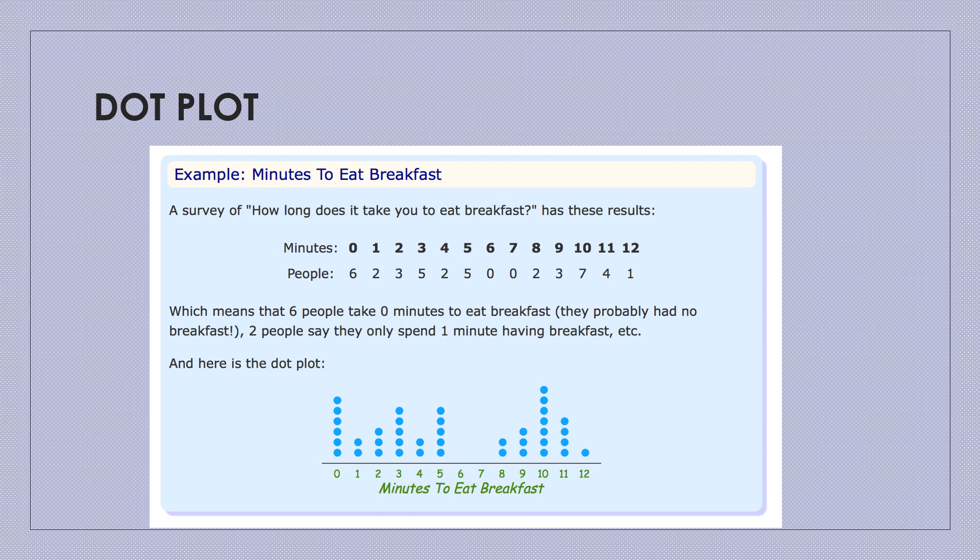Let us see what a dot plot is. Here I have an example. There is a survey and the question is, how long does it take for a person to eat breakfast? So you have data here collected, which gives the number of people and the minutes they take to eat their breakfast. This can be represented using a dot plot. You have a horizontal line. You have sorted that in ascending or descending order. So the minutes are starting from 0 to 12.